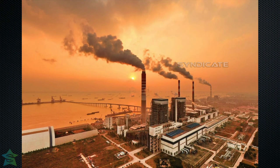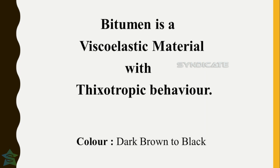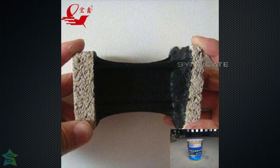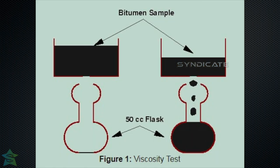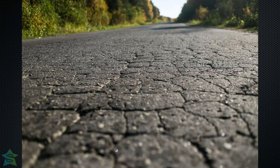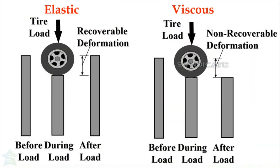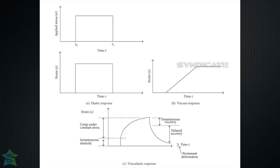Basically, bitumen is a viscoelastic material with thixotropic behavior, dark brown to black in color. At high temperatures (greater than 200°F), bitumen acts almost entirely as a viscous fluid, displaying the consistency of a lubricant such as motor oil. At very low temperatures (below the freezing point), bitumen behaves mostly like an elastic solid, rebounding to its original shape when loaded and unloaded. At intermediate temperatures of 20 to 30°C — found in most pavement systems — bitumen has characteristics of both a viscous fluid and an elastic solid.